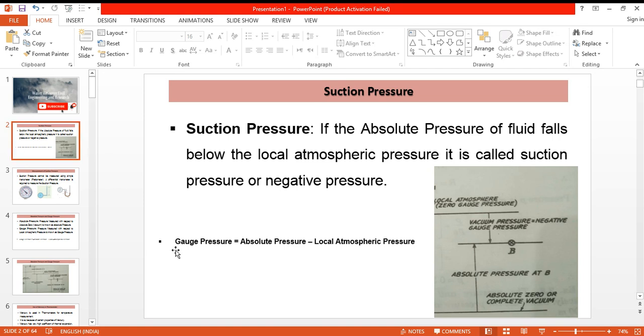For example, if we see this point B, the local atmospheric pressure is more than the absolute pressure at point B, so the pressure measured here will be a negative pressure. The gauge pressure will be absolute pressure minus local atmospheric pressure, and since absolute pressure is less than local atmospheric pressure, we will have the gauge pressure in the form of negative pressure. This negative pressure is called the suction pressure.